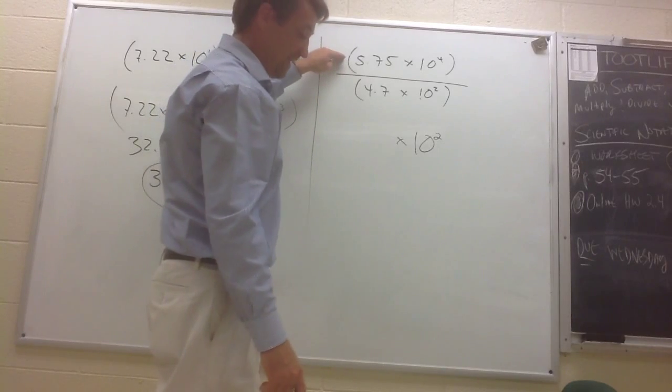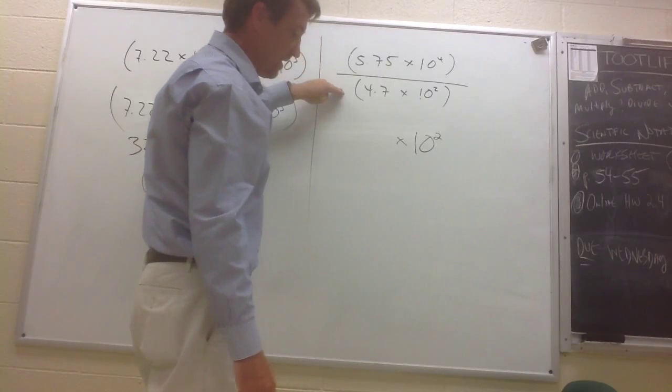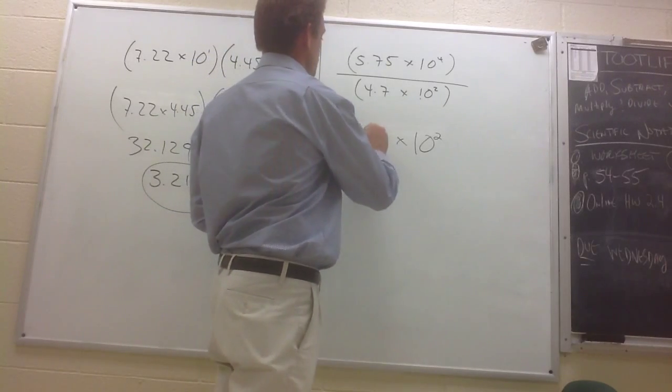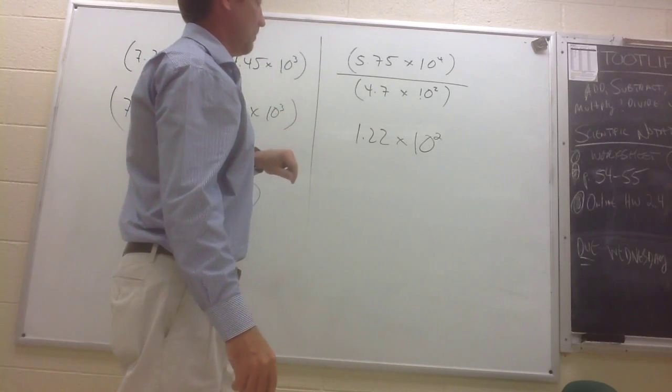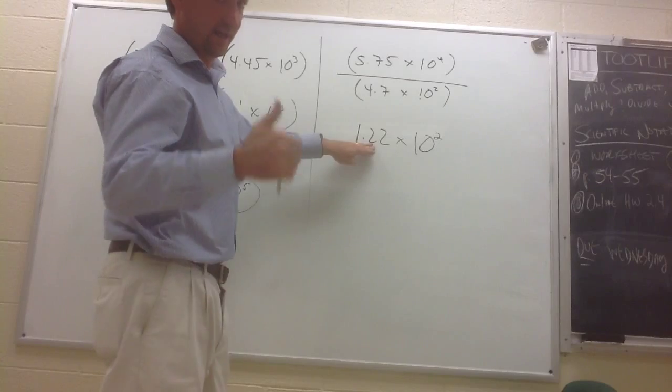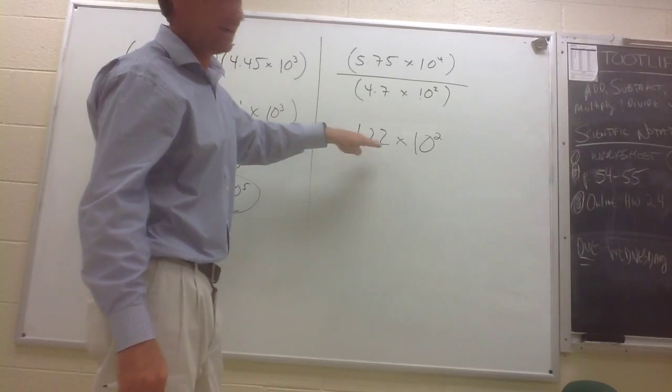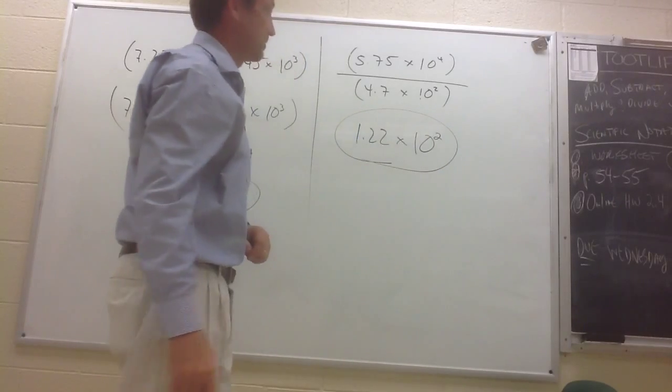5.75 divided by 4.7 is going to give you about 1.22, and we're going to round that one. And now because 1.22, this number is at least 1 and less than 10, so this is already written in scientific notation. So that answer is good.